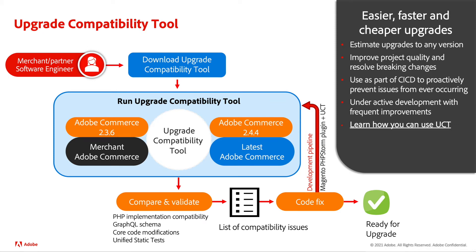The Upgrade Compatibility Tool is a command line tool that analyzes your instance for potential upgrade issues. It checks for issues between the current version you have installed and the version you are trying to upgrade to. Using this tool will reduce the effort required from your team to understand the scope and impact of the upgrade. It will help you avoid common code issues when upgrading and provides clear direction on how to resolve issues found. It also helps prioritize the most critical issues necessary to ensure a successful upgrade, saving time and cost when upgrading.